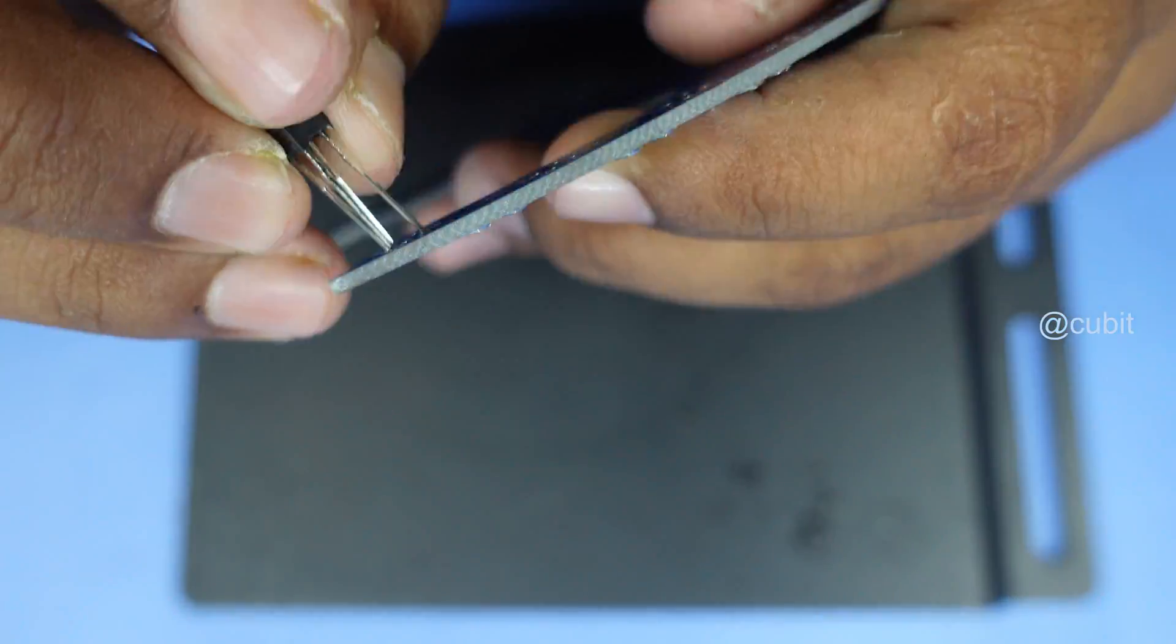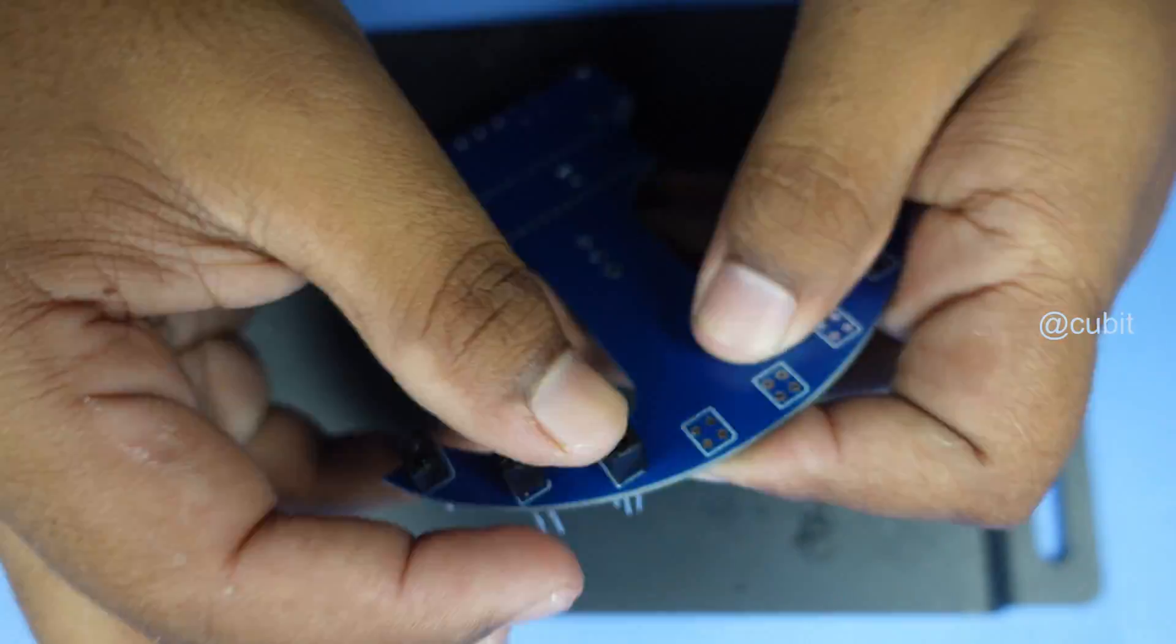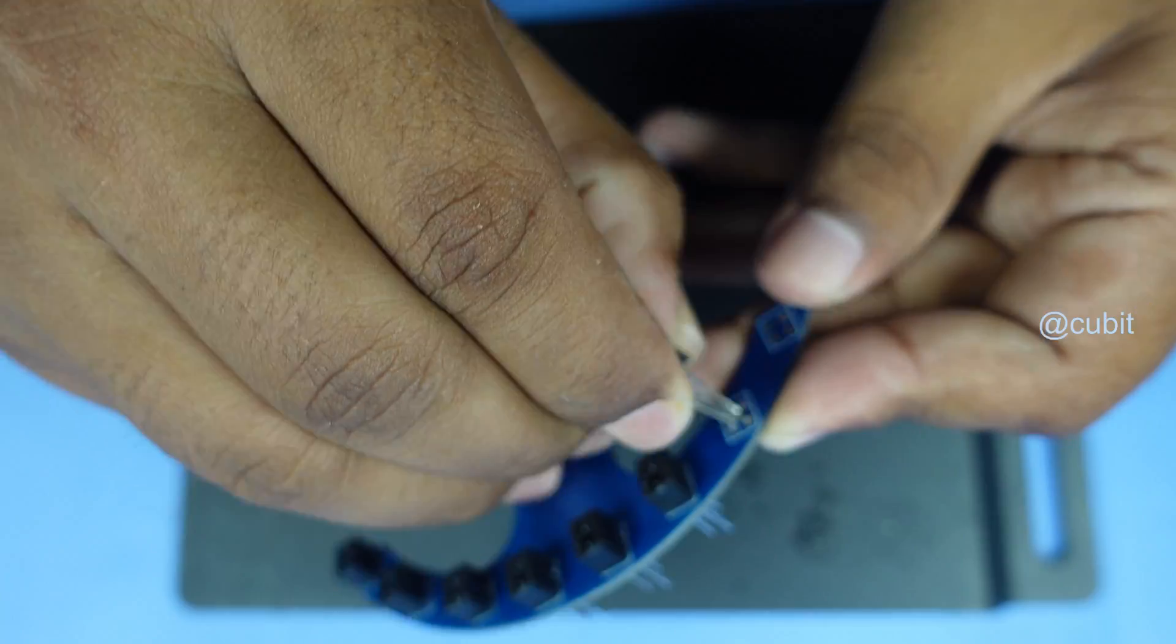Now, we have the RPR220 sensor, which is used to help our robot detect lines. Let's complete the sensor soldering process. This part is crucial, so we prioritize it to save time during assembly.